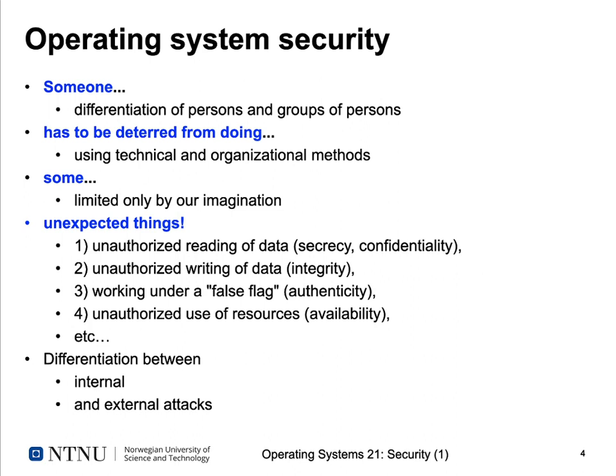Some people have to be deterred from doing things. We can use technical methods — hardware methods, software methods — but also organizational methods, such as dividing our organization into appropriate groups and assigning permissions appropriately. What should they be deterred from? They can try to read your data, access secret documents, override your data, change information perhaps without you noticing, or run programs they're not allowed to. Essentially, everything that should not be permitted should be disallowed in the system.